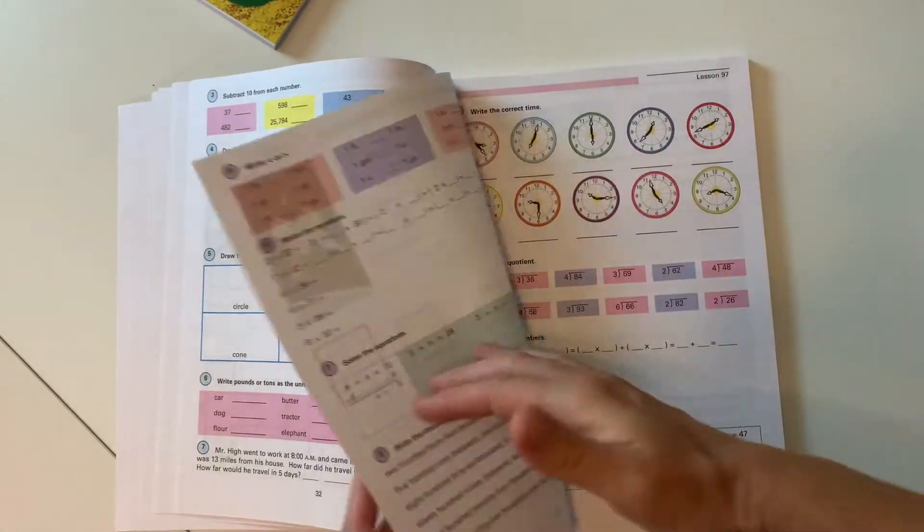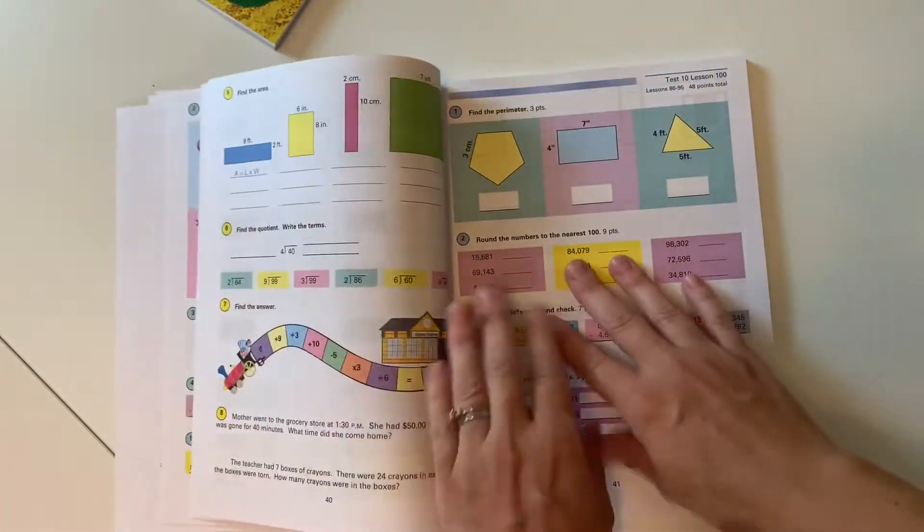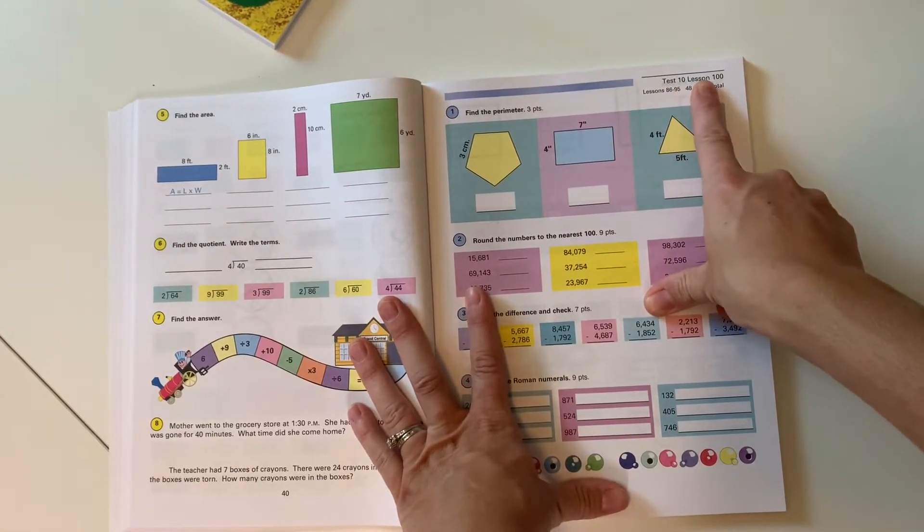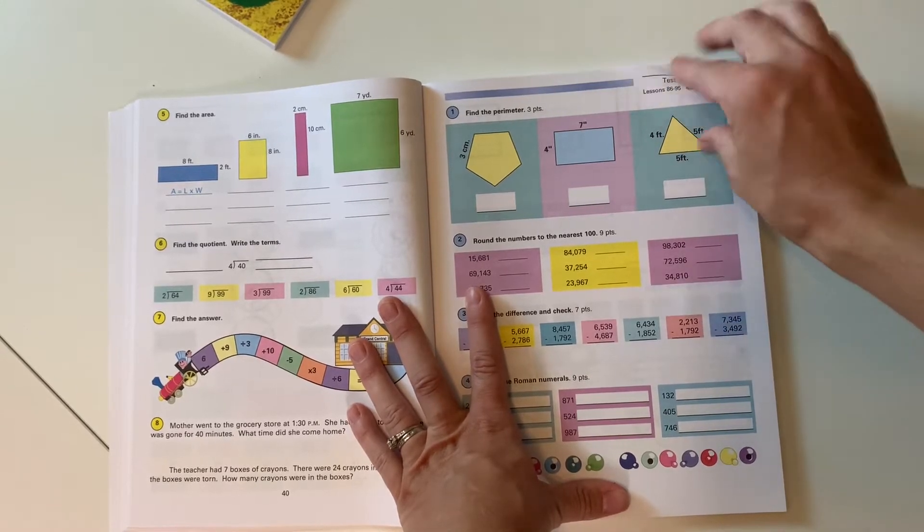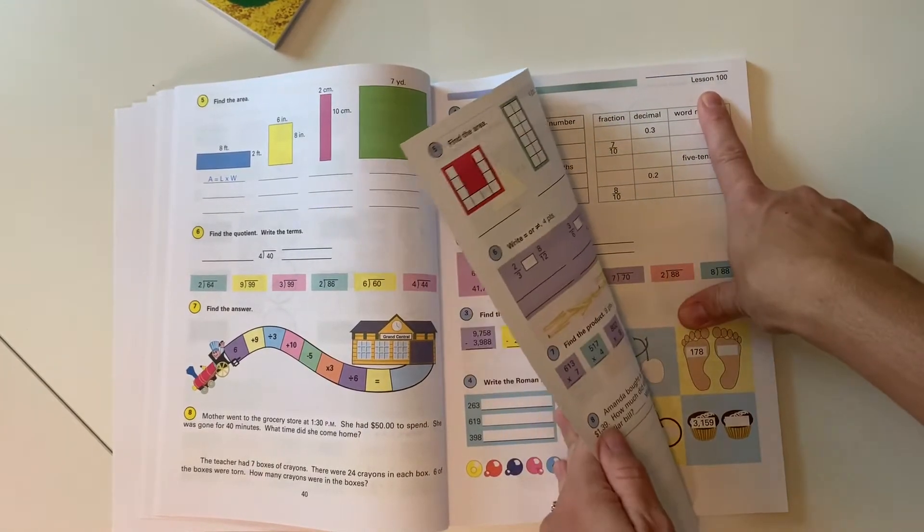So let's flip to a test. The thing with these tests is you almost miss them. This is a test. Test 10, lesson 100. And it's going to test over these lessons before. And there is also lesson 100 right after that.